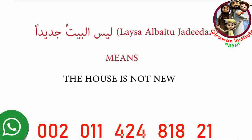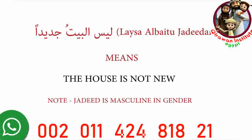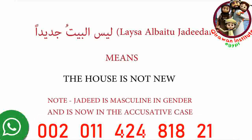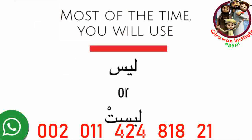You'll notice that the spelling of the word jadid also changes. We add an aleph to the end of the word and then tenwin feta, because jadid is masculine in gender and is now in the accusative case. In part one, after learning the conjugation of leysa, we learned that most of the time you'll only use leysa or leysit.